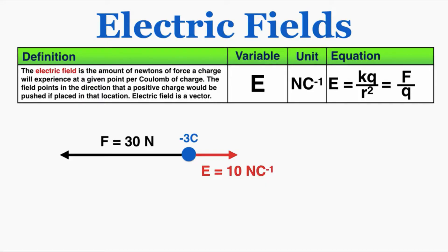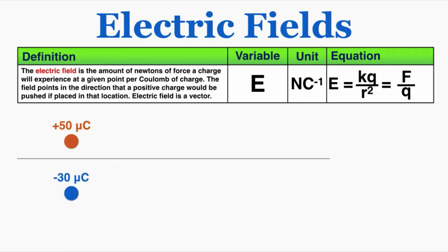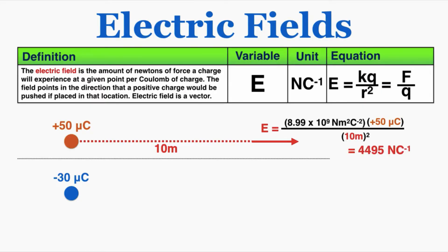The field tells us that no matter what charge we place inside it, the field will exert this many newtons per coulomb of charge. We can calculate the electric field by taking a charge and knowing the distance we're measuring from it. Here I have positive 50 micro coulombs, measuring 10 meters away. I already know the field will point away from the charge — because a positive charge placed there would be repelled — and plugging into our equation gives a field strength of 4,495 newtons per coulomb. This is actually a pretty normal field strength, since a coulomb is such a large charge.